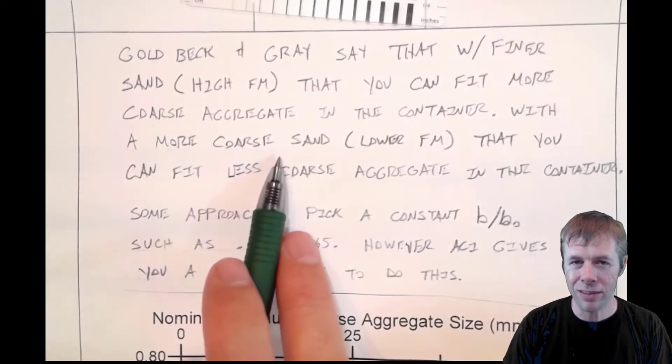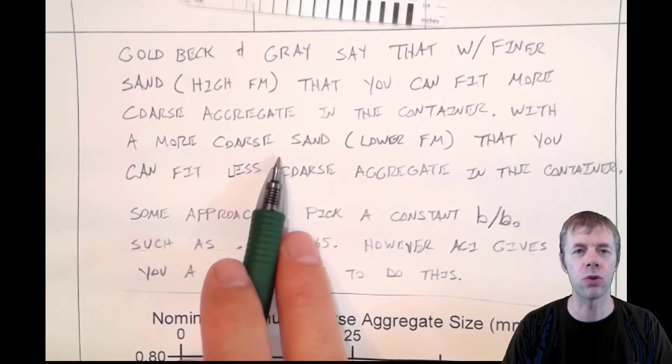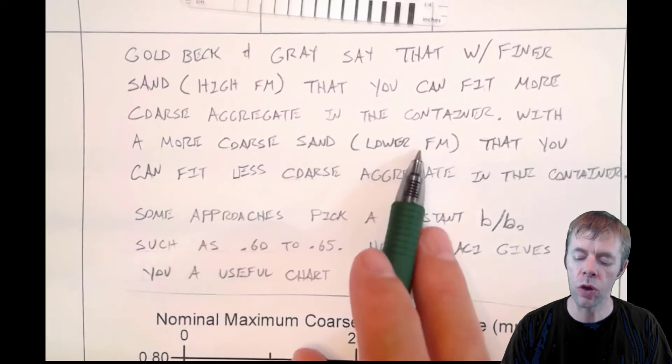But if you have a coarse sand—imagine just some larger particles inside your sand—it's going to be harder to get those coarse aggregates in there. You're not going to be able to get as much. This is with a lower fineness modulus.